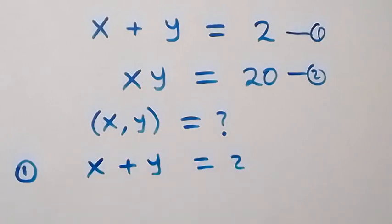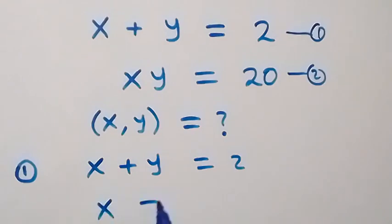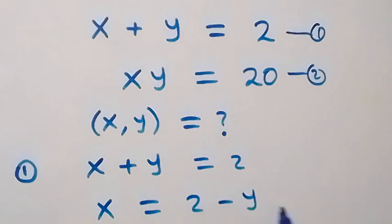Here, let's make y the subject. Then, we have x now equals to 2 minus y. Label this as equation 3.